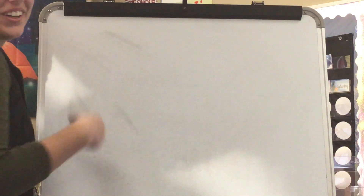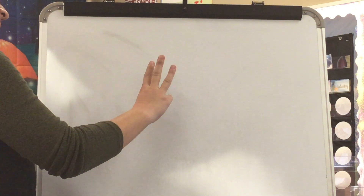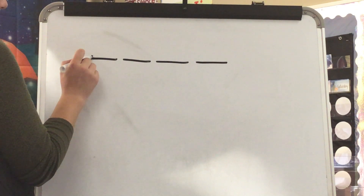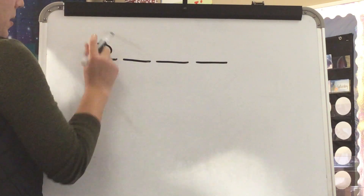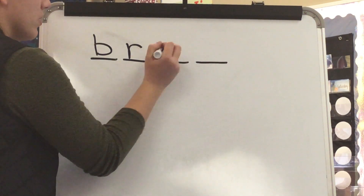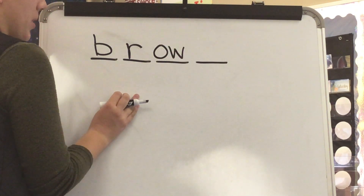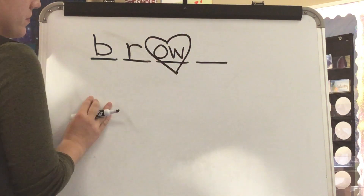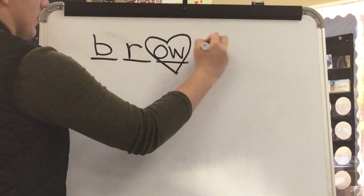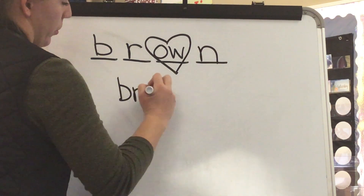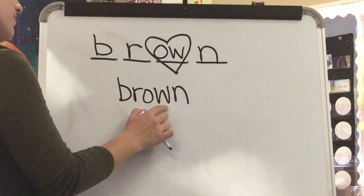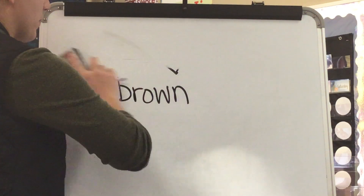Our next word is Brown. What word? Brown. Stretch Brown. B-R-OW-N. What is the first sound you hear in Brown? B. Yes. B. R. Next sound is R. OW. OW in Brown is spelled O-W. This is a tricky part of Brown that we have to know by heart. B-R-OW-N. Final sound. N. Yes. This is the word Brown. What word? Brown. Spell Brown. B-R-O-W-N. Word. Brown. Yes. Let's read our high frequency words.